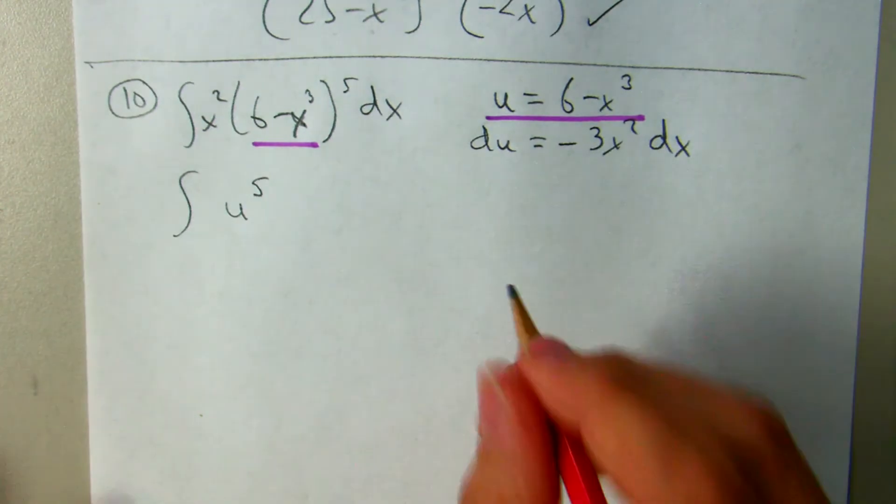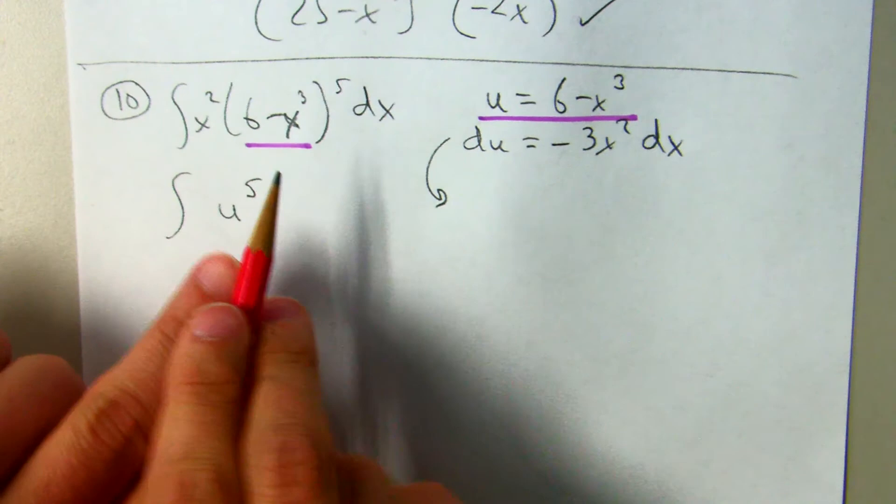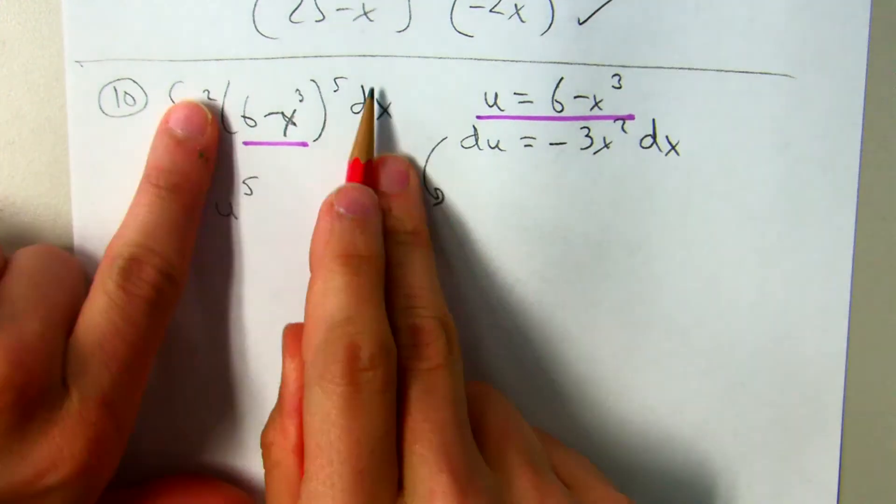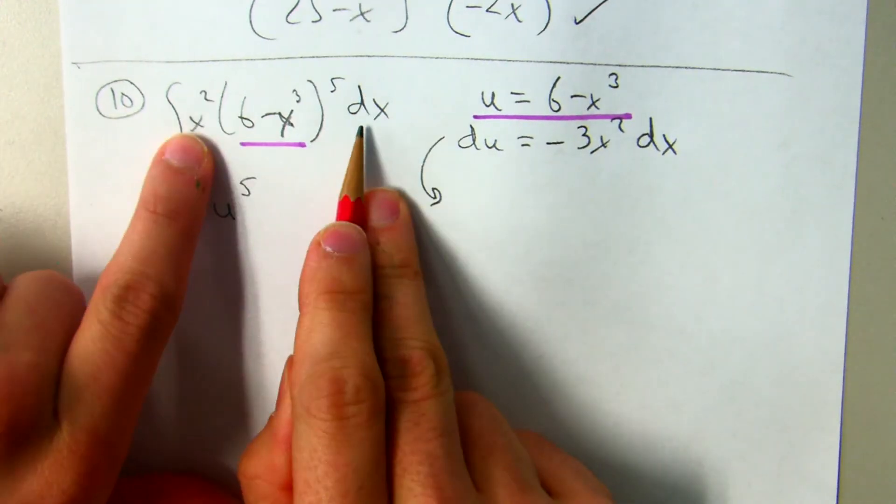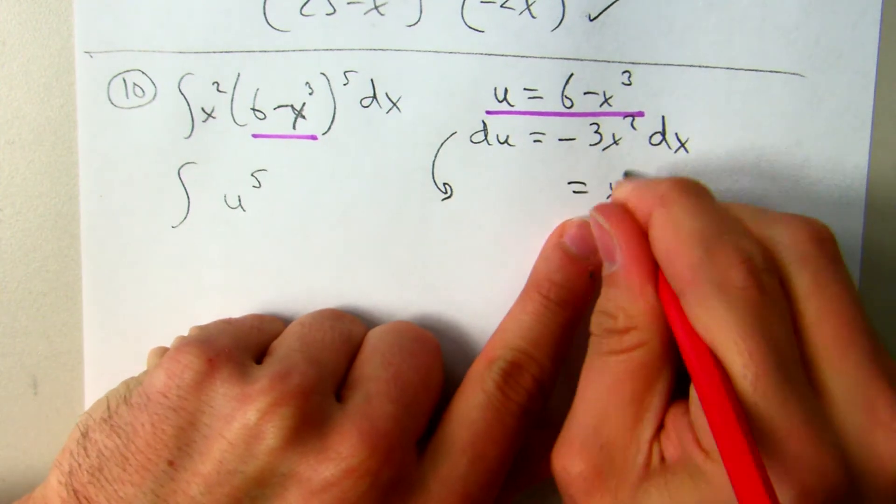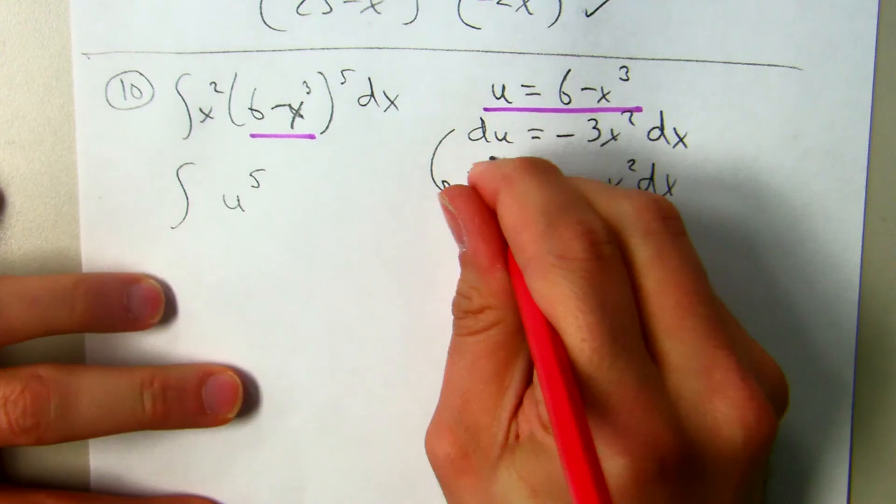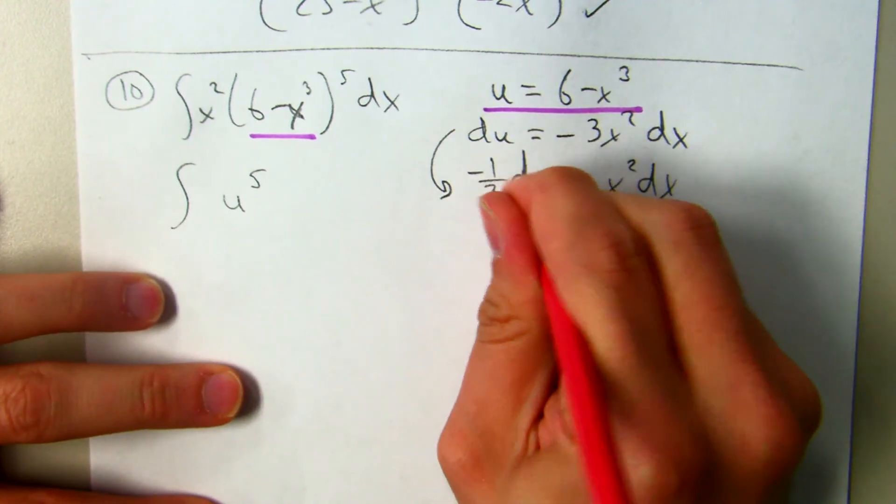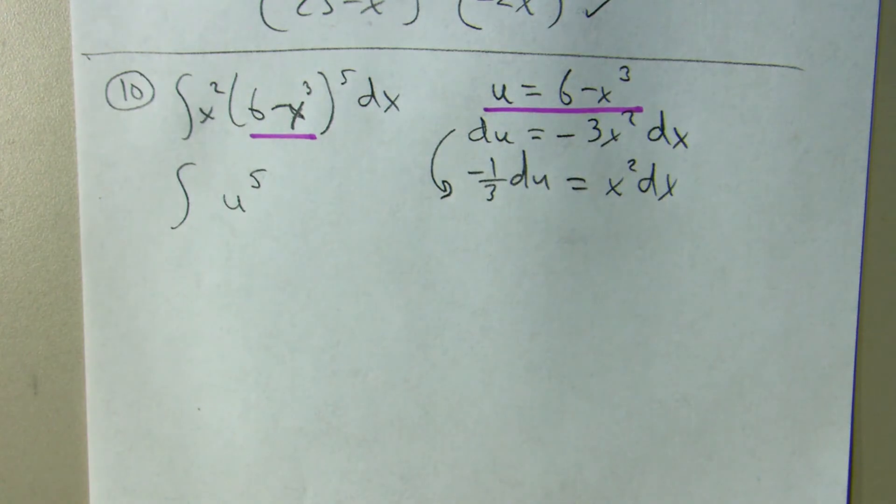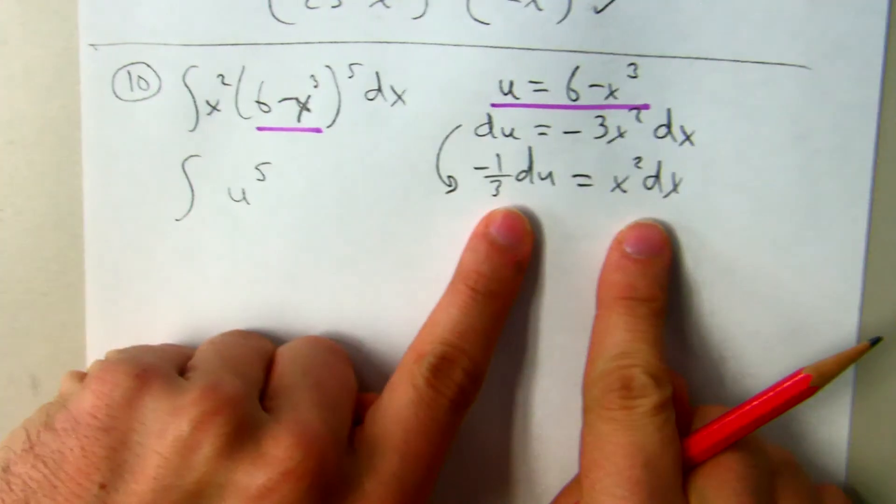But here's what you may want to do when you have to make this adjustment if you're struggling with this. Actually solve this for what you want. So if you want an x squared dx, make sure this is x squared dx. So I can change this to x squared dx by dividing both sides by negative one third. Or dividing both sides by negative three, which is like multiplying by negative one third. So you see how it went from this to this?